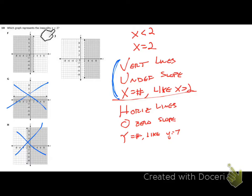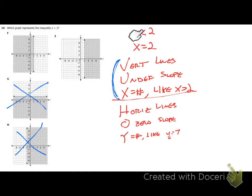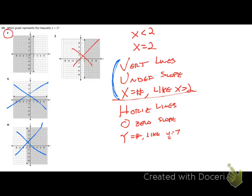We have a vertical line through x = 2. Answer choice H goes through -2, so we don't want that either. We're really just figuring out where to shade — left or right of the line. Both remaining choices have a dotted line, which is correct because we don't have 'or equal to.' We're asking: where are the x-coordinates less than 2? All points to the right have coordinates like 4, 6, 8 — greater than 2. All points to the left have x-coordinates like -2, 0, -3 — less than 2. So the answer is F, shaded to the left.